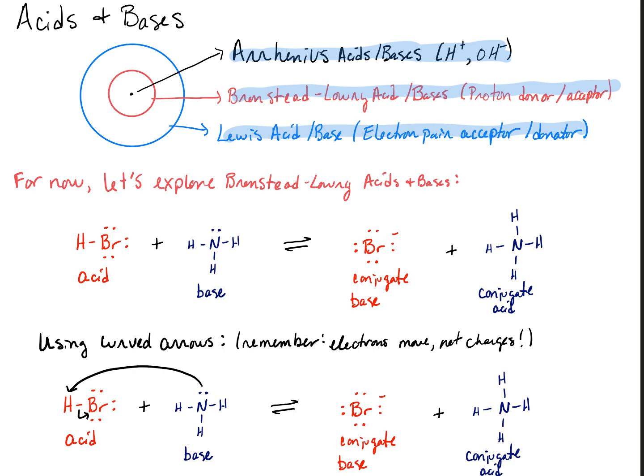We're going to consider the Bronsted-Lowry definition of acids and bases for now. So if we have an acid like HBr that is reacting with a base, this would be our acid, and our base is NH3. What we have is we establish an equilibrium. So the reaction is going back and forth, and we haven't really been able to tell yet which side of the reaction is favored.